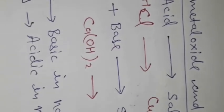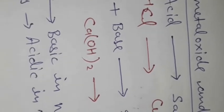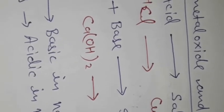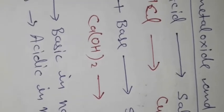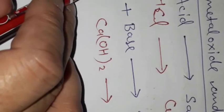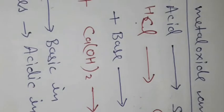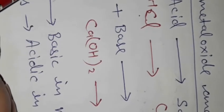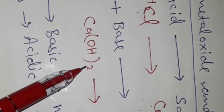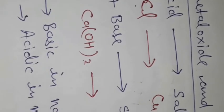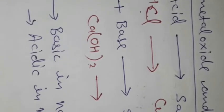Reaction with metal oxides and non-metal oxides: when a metal oxide reacts with acid it forms salt and water. Similarly, non-metal oxides react with a base to form salt and water. For example, metal oxide CuO reacting with HCl forms CuCl₂ and water. Non-metal oxide CO₂ reacting with Ca(OH)₂ forms CaCO₃ plus water.